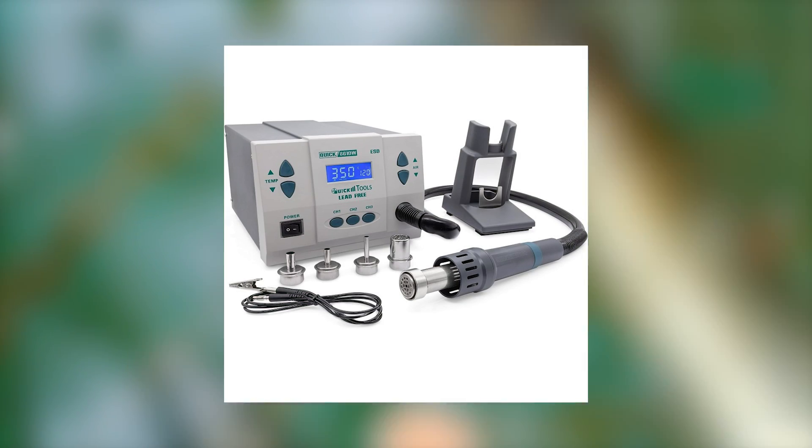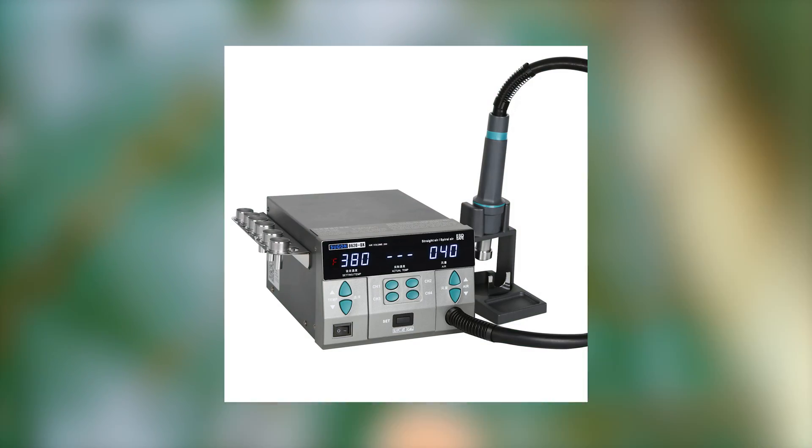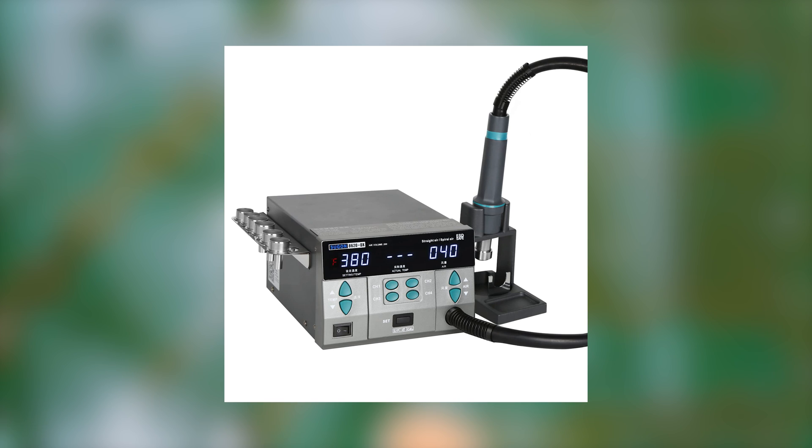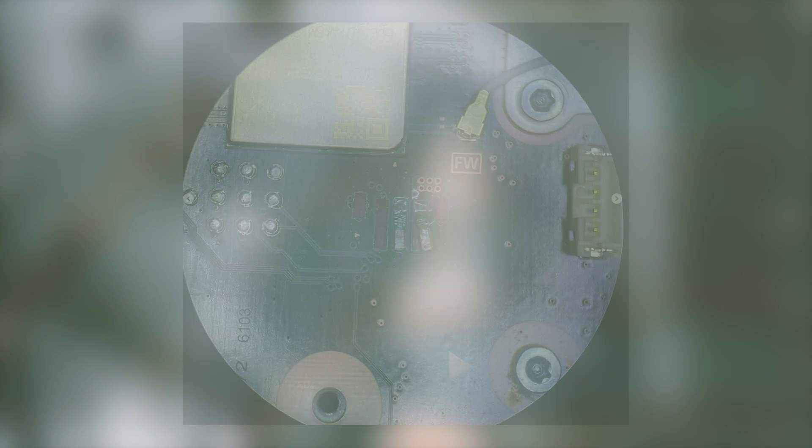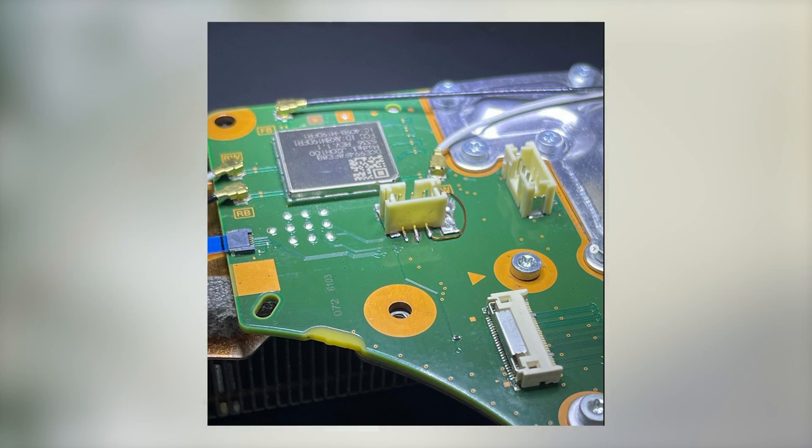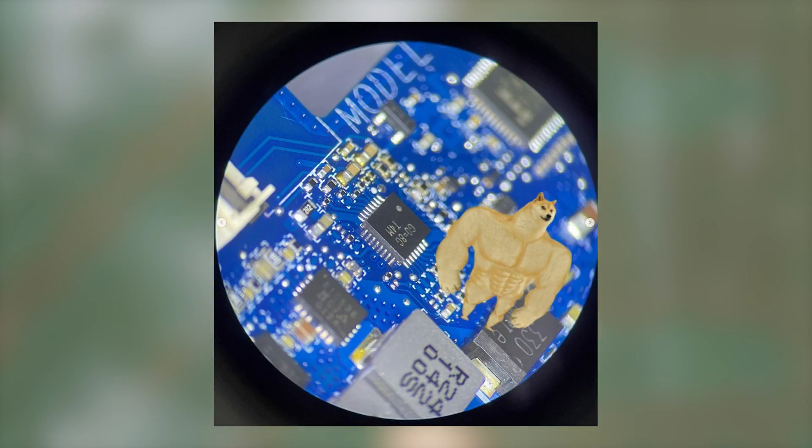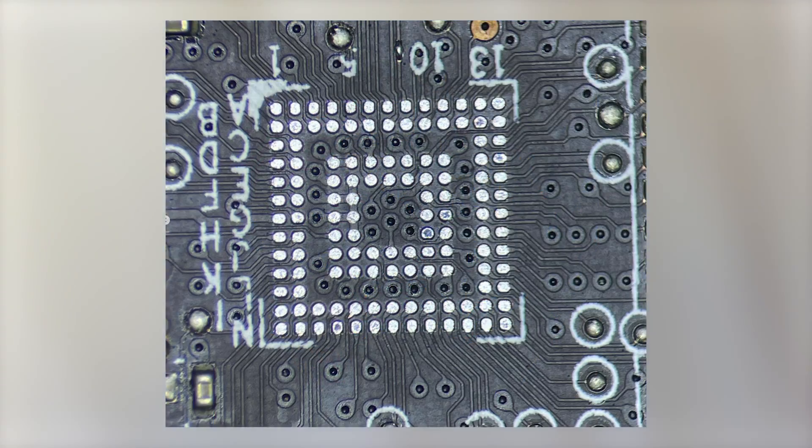Just for a bit of backstory, for the last 6 years or so I've been using both the legendary QUICK 861DW and the SUGON 8620DX. Both of these are 1kW hot air stations much like the ATEN, and using them I've been repairing MacBook, phone and console logic boards daily as a career, just to put my opinion in perspective.